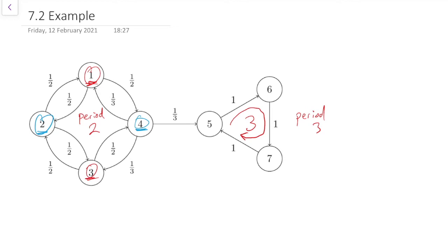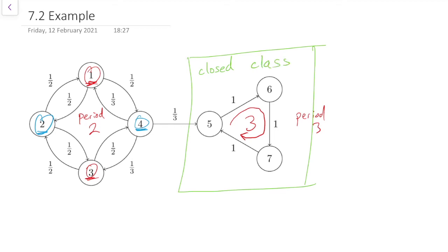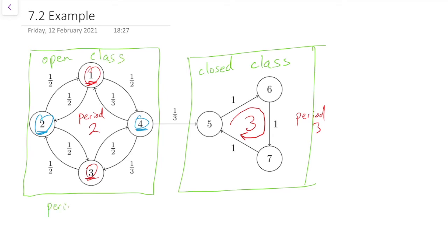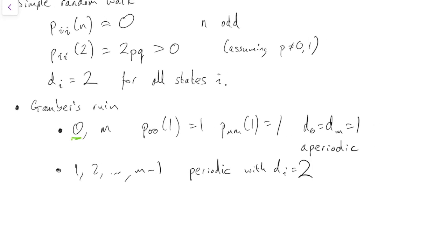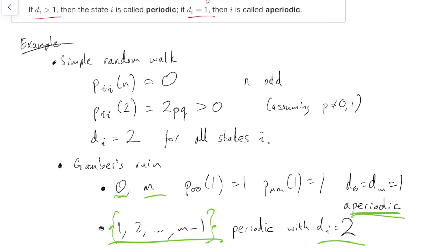Let's go back to what we were doing about communicating classes. States 5, 6, and 7 all communicate with each other, but from 5 you can't get back to the left-hand side, so this is one closed communicating class. Whereas 1, 2, 3, and 4 all communicate with each other — that's a different communicating class, and that one's open. So everything in the left-hand class has period 2, and everything in the right-hand class has period 3. Going back to gambler's ruin, everything in class 0 was aperiodic, everything in class m was aperiodic, and the interior class has period 2. Similarly with the simple random walk, everything was in the same class and everything has period 2.